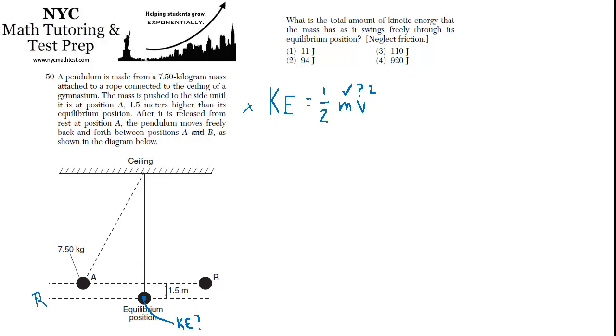It has no potential at this point. It has only kinetic. So we can say potential energy at A equals the kinetic energy at the equilibrium position. And what is the potential energy at A?